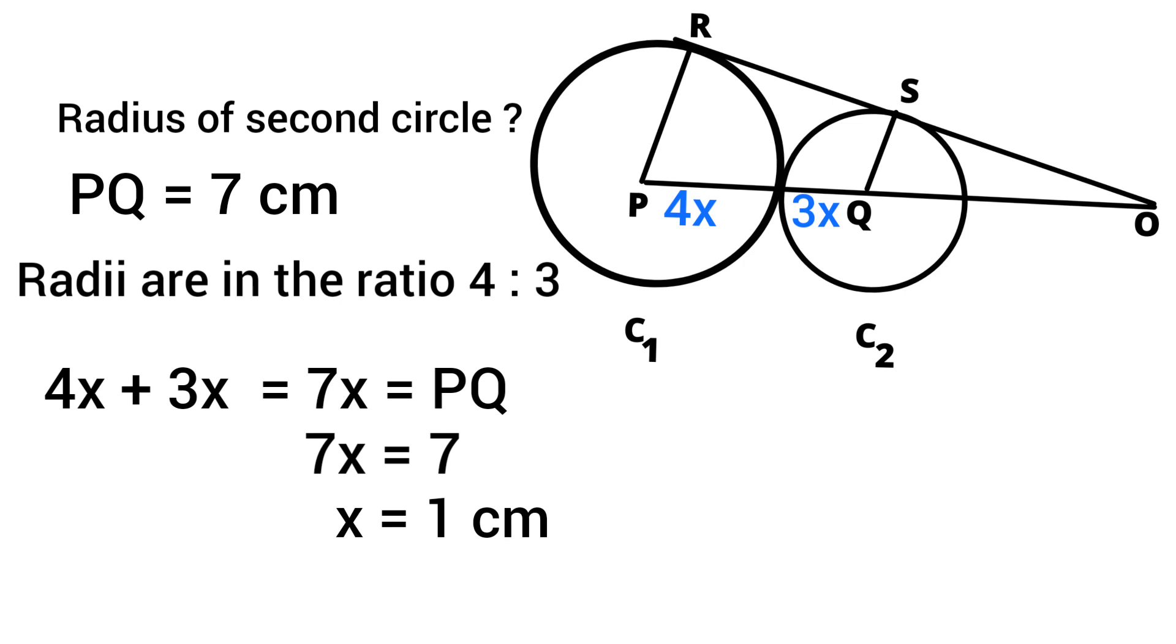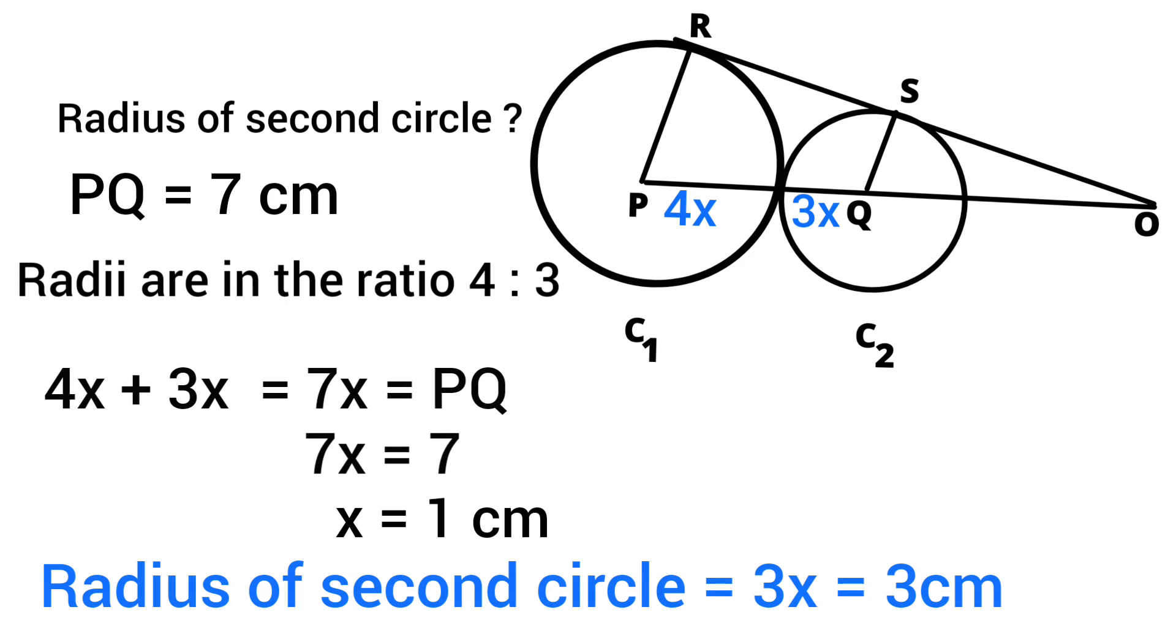Therefore, radius of the second circle equals 3 times X, that is, 3 centimeters.